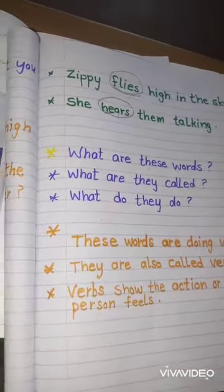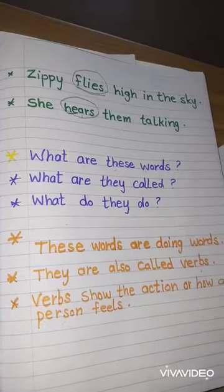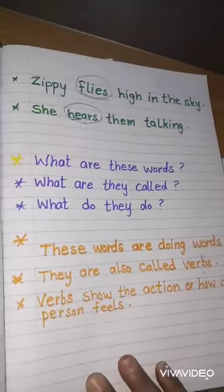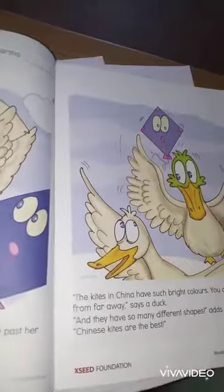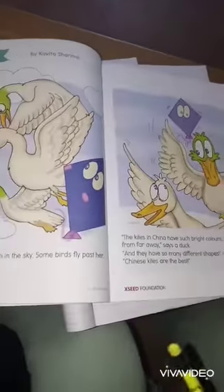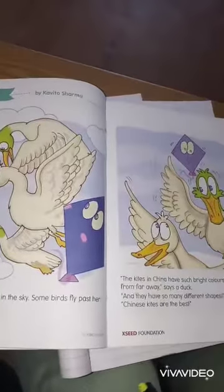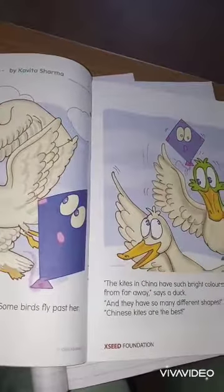Now read the story The Blue Kite, underline all the verbs in it, and write those verbs in your notebook. Thank you.